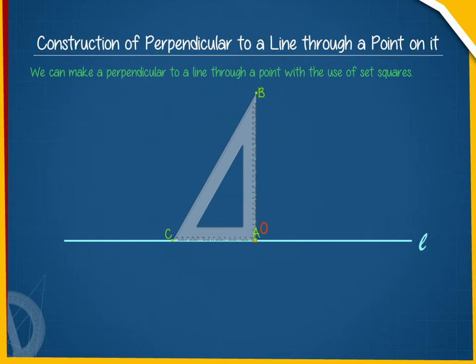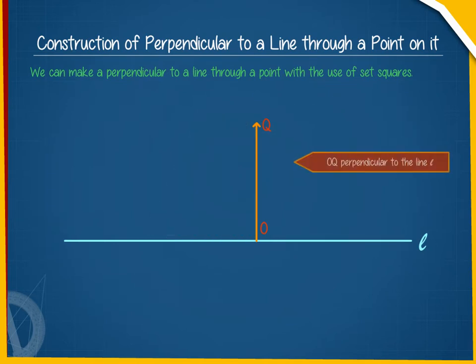Now, draw a line OQ along the edge A as shown here. OQ is the line perpendicular to the line L through the point O.